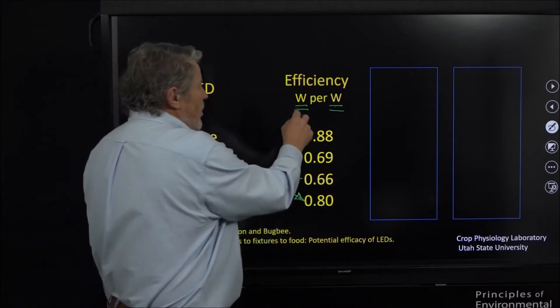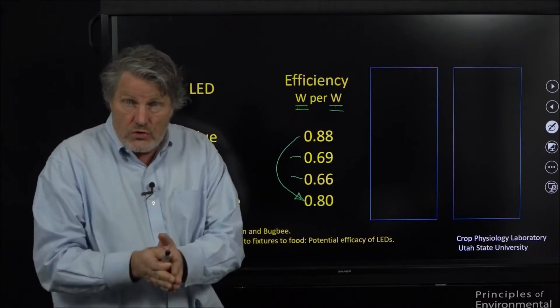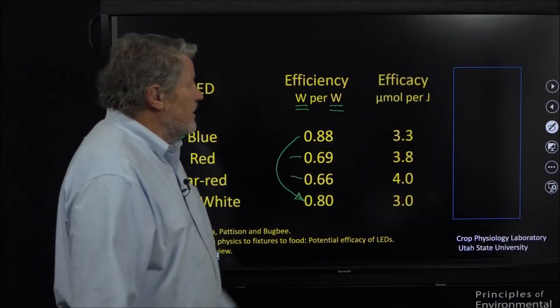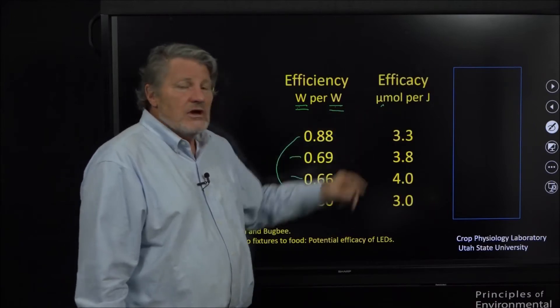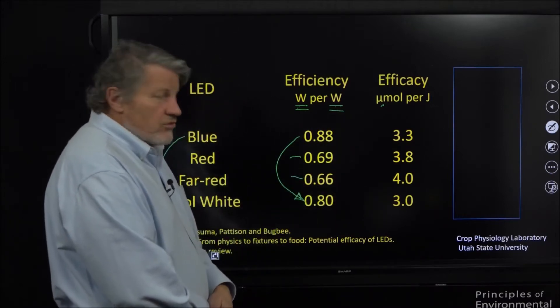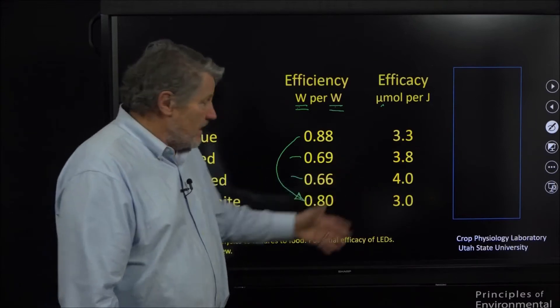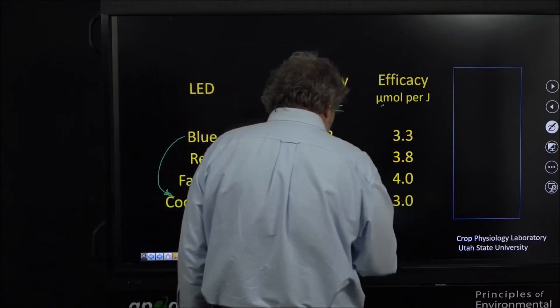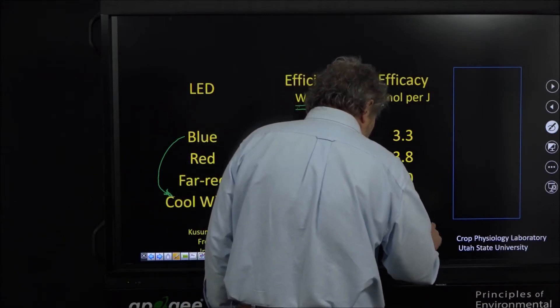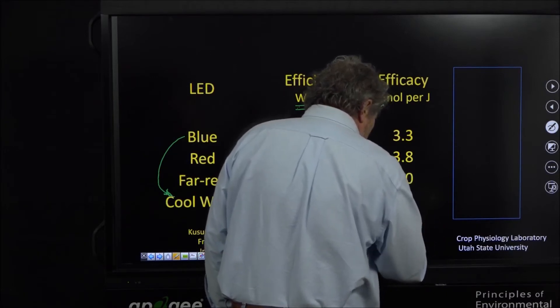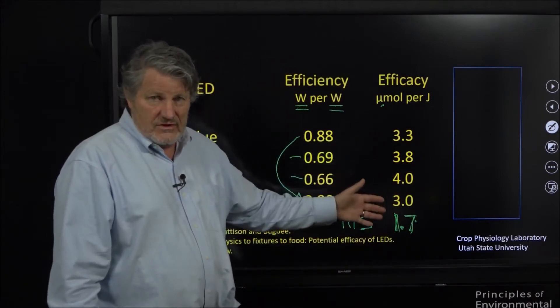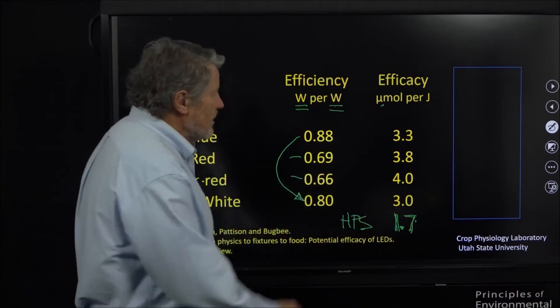And then the reds and the far reds are slightly less efficient. So this is efficiency. But we know that watts of energy doesn't cause photosynthesis - photons cause photosynthesis. So this column is micromoles of photons per joule of energy and these are the peak numbers we get. These are staggeringly high.